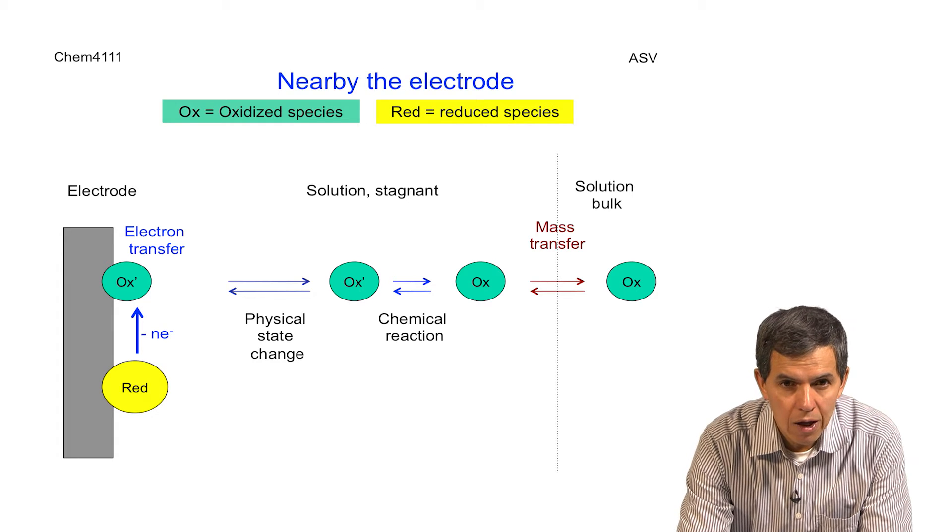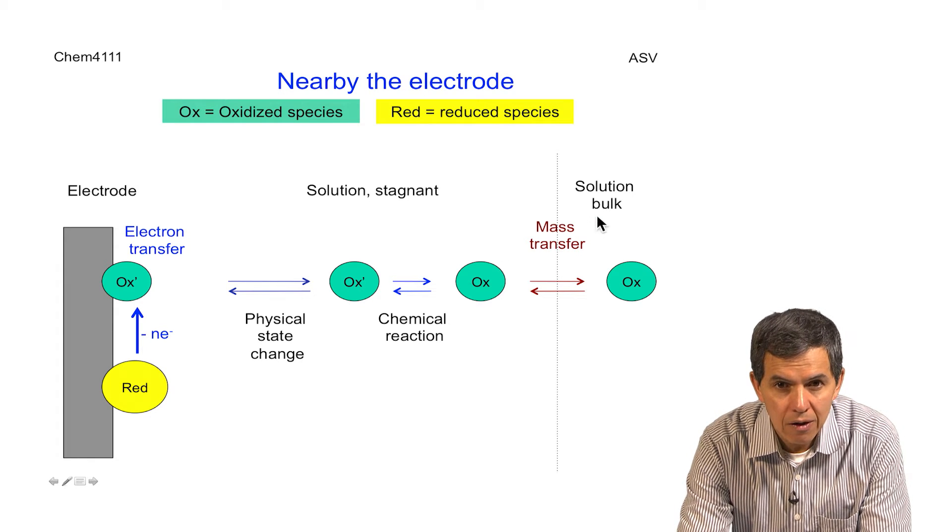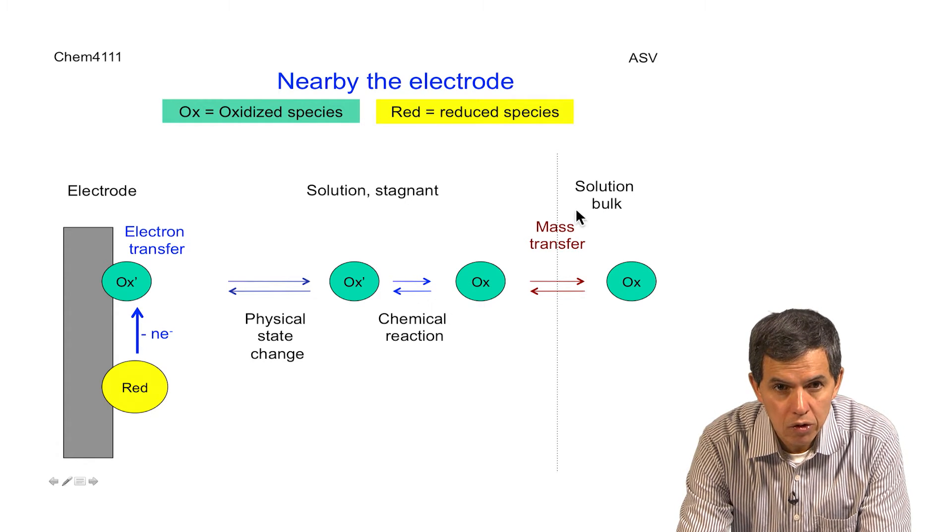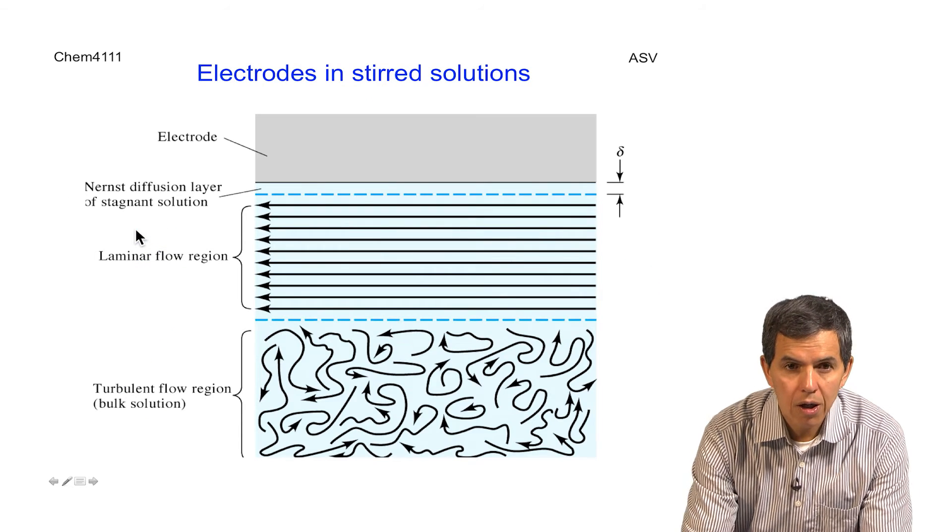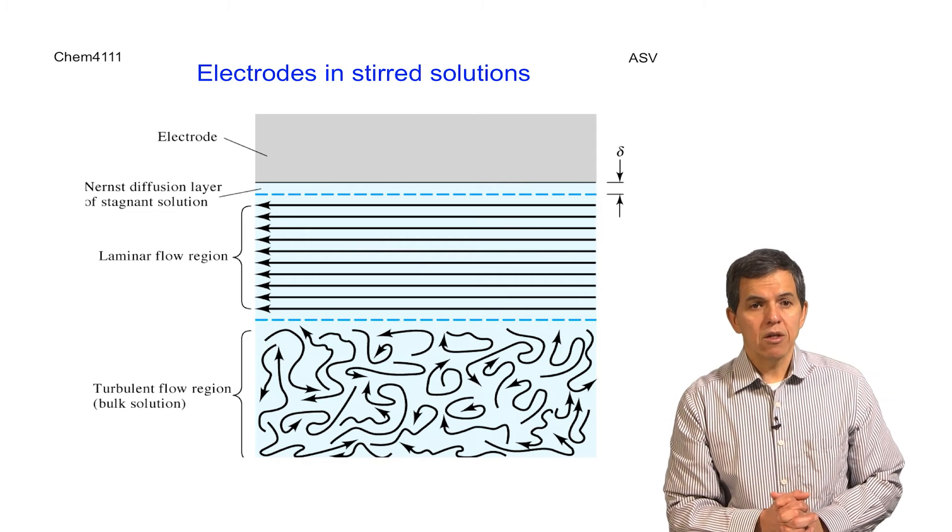But let's begin first by looking at how the different regions—the bulk solution, the stagnant layer, and the electrode—interact when we actually talk about the movement of the species that we have here.